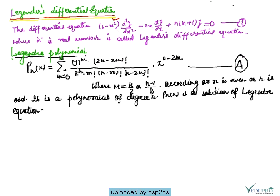The equation (1-x²) d²y/dx² minus 2x dy/dx plus n(n+1)y equals 0 is called the Legendre differential equation, where n is a real number.